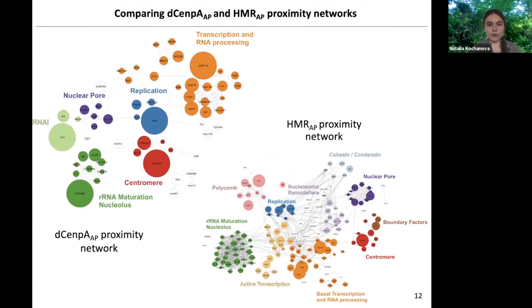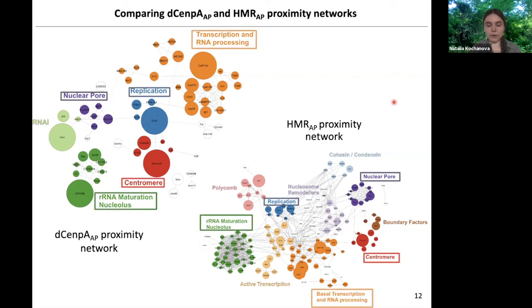We decided to visualize those proteins as STRING networks of published protein-protein interactions, where each node is a protein, the size of the node depicts the enrichment of the protein in the pulldowns, and each edge corresponds to an interaction between two proteins. When we visualize such networks, we can see clusters which are functionally or structurally relevant — for example, centromere, replication, or nucleopore. What is interesting is that if we look at those two proximity networks for proteins separated only by high-resolution microscopy, some of their clusters, although they contain slightly different sets of proteins, are conceptually similar — for example, replication, nucleopore, centromere, nucleolus, and transcription.